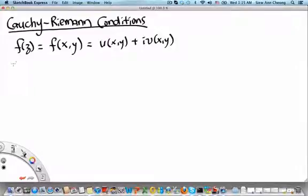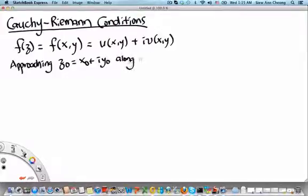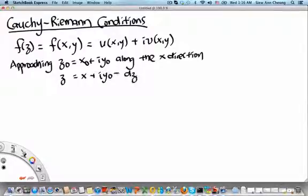Now, let us consider approaching z0 = x0 + iy0 along the x direction. If we do so, then z will be equal to x + iy0. And in a sense, dz is equal to dx.